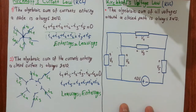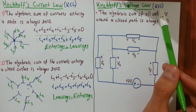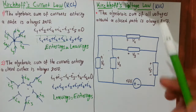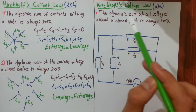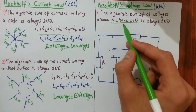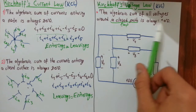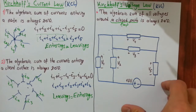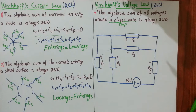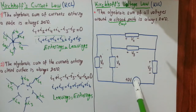Now let's talk about Kirchhoff's voltage law, abbreviated as KVL. The statement of KVL is: the algebraic sum of all voltages around a closed path is always zero. A closed path is a loop, so the algebraic sum of all voltages around a loop is always zero. Notice that this is a mesh, and a mesh is a special form of loop, so we can apply KVL around it.